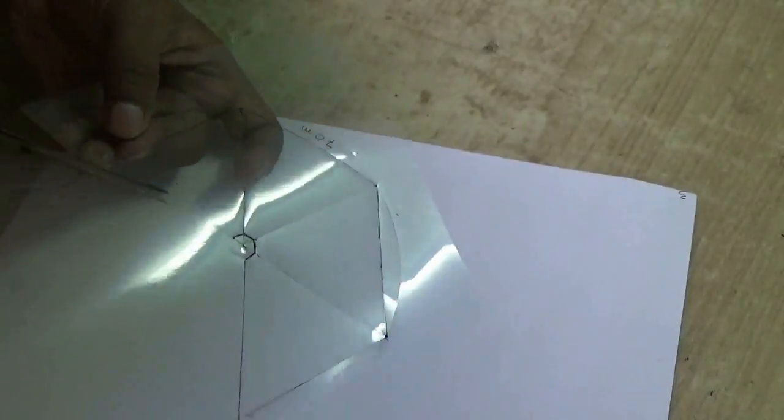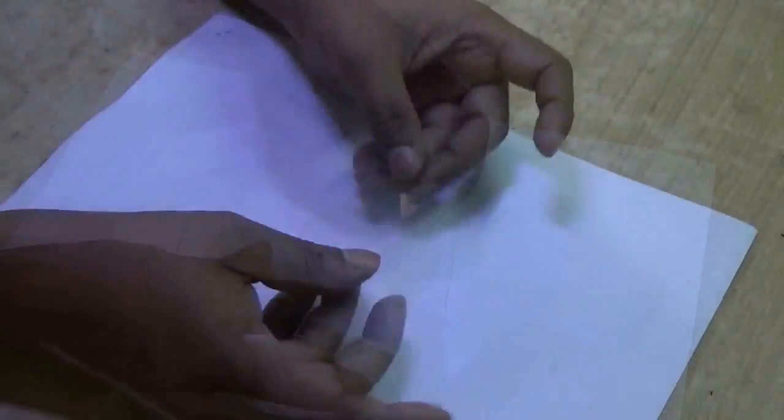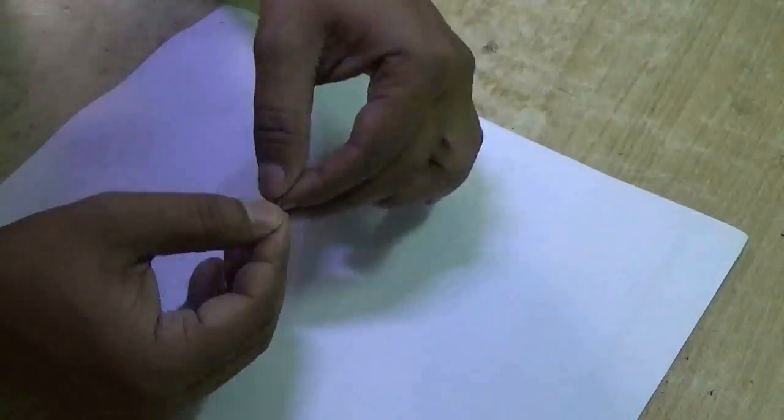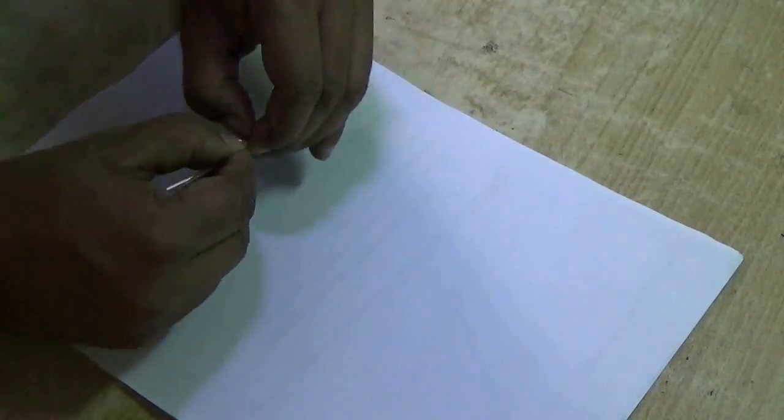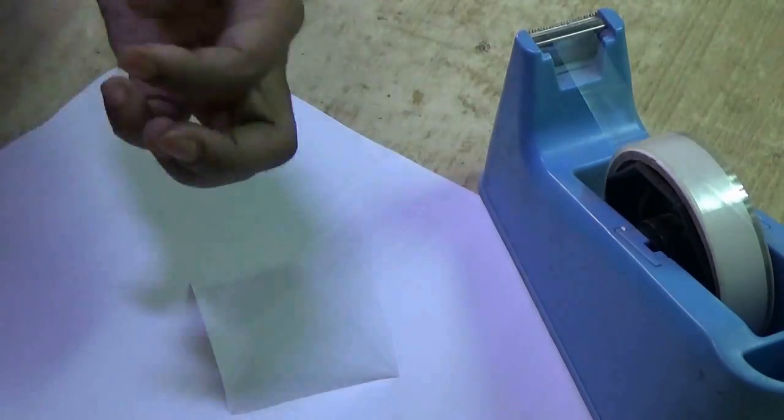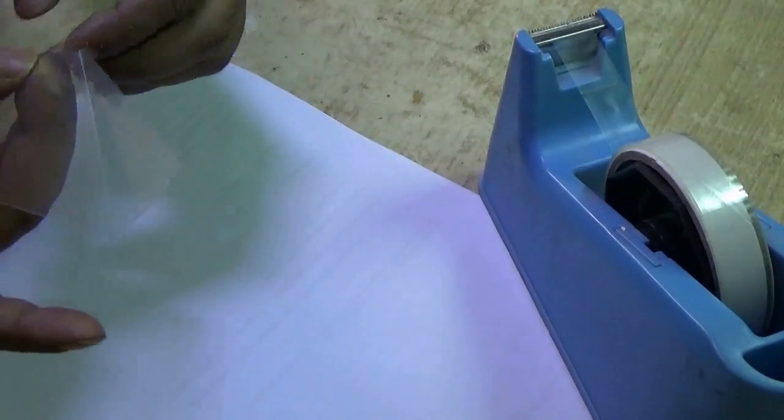Then clean all the ink. Fold along the folding lines, and then if you fold all together, the two edges come together to make a pyramid. Join the two edges using cellophane tape.